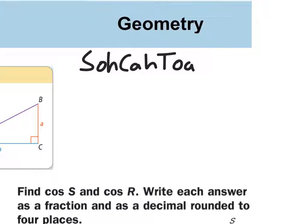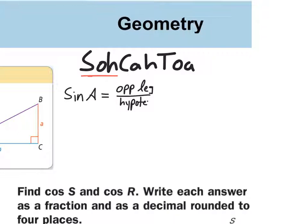The S-O-H, the first part of SOHCAHTOA, is sine. The abbreviation for sine is S-I-N-E, but if we abbreviate it, it's always spelled S-I-N — a three-letter abbreviation. Please say 'sine' — it's not 'sin'; it did nothing wrong. So sine of angle A equals the opposite leg over the hypotenuse. That's what SOH stands for: sine is opposite over hypotenuse.